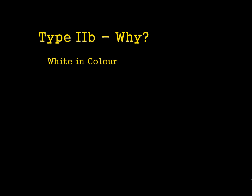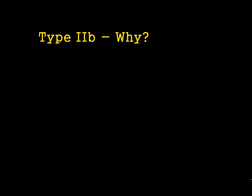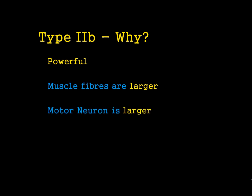Type 2B fibres are white in colour, which makes them very different. The reason is that myoglobin — the body's store of oxygen — is red in colour, and that was the fuel source for Type 1 muscle fibres. Type 2B muscle fibres don't need oxygen, so they don't need any myoglobin — because of that, they are white. They don't have that pigment to colour them. Type 2B muscle fibres are also not only fast but very powerful because the muscle fibres themselves are actually larger. They also have a larger motor neuron, which means they're able to receive a greater amount of stimulation by the brain, and this allows them to be more powerful.